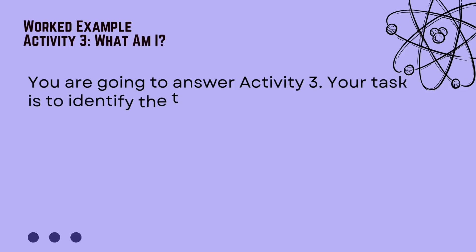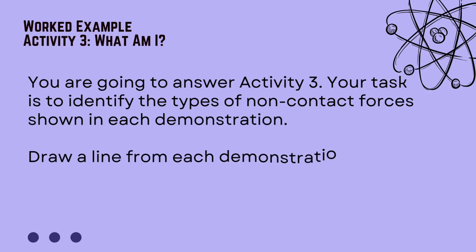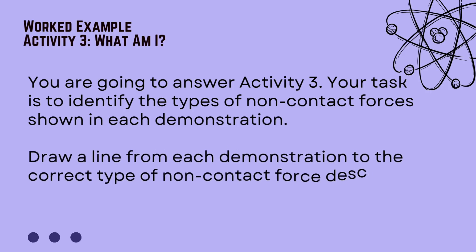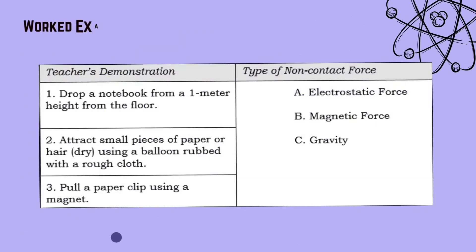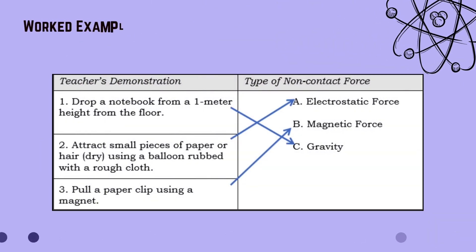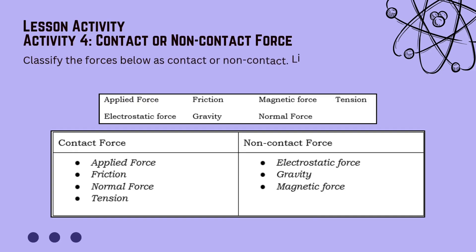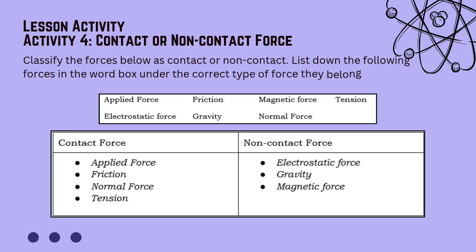For another worked example, your task in Activity 3 is to identify the types of non-contact forces shown in each demonstration. Draw a line from each demonstration to the correct type of non-contact force. Then classify the forces listed in the word box as either contact or non-contact, placing them under the correct type.